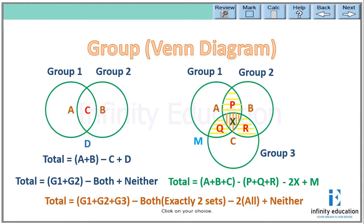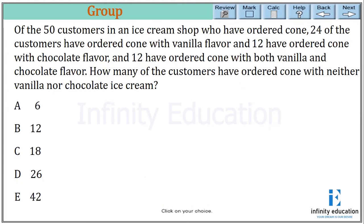Now let's see with some examples. Of 50 customers in an ice cream shop who ordered cones, 24 customers ordered a cone with vanilla flavor, 12 ordered a cone with chocolate flavor, and 12 ordered a cone with both vanilla and chocolate flavor. How many customers ordered a cone with neither vanilla nor chocolate ice cream? We know the formula: total equals group one plus group two minus both plus neither.